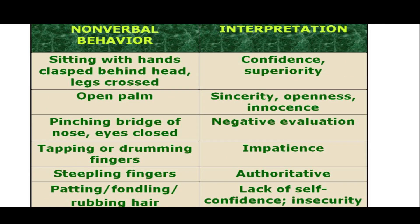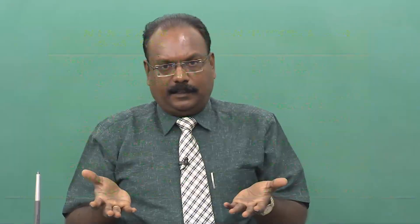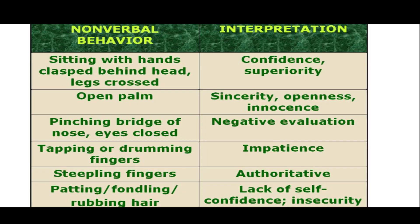Sitting with hands clasped behind the head and legs crossed — there was a picture in the quiz of a boss sitting like this — shows confidence and superiority. Open palm: sincerity, openness, even innocence. When you tell small children 'Show me what you have in hand,' they will just open their palms — indicating, 'No, I do not have anything.' Innocence.